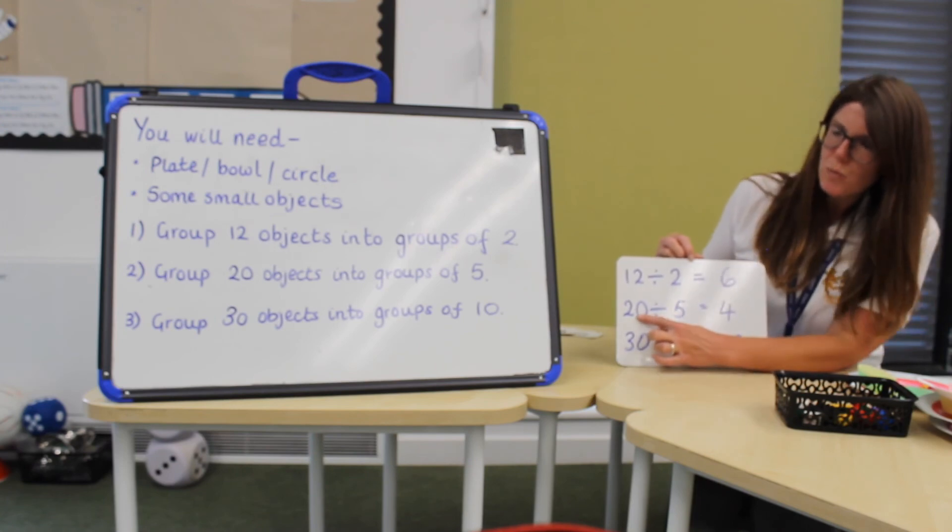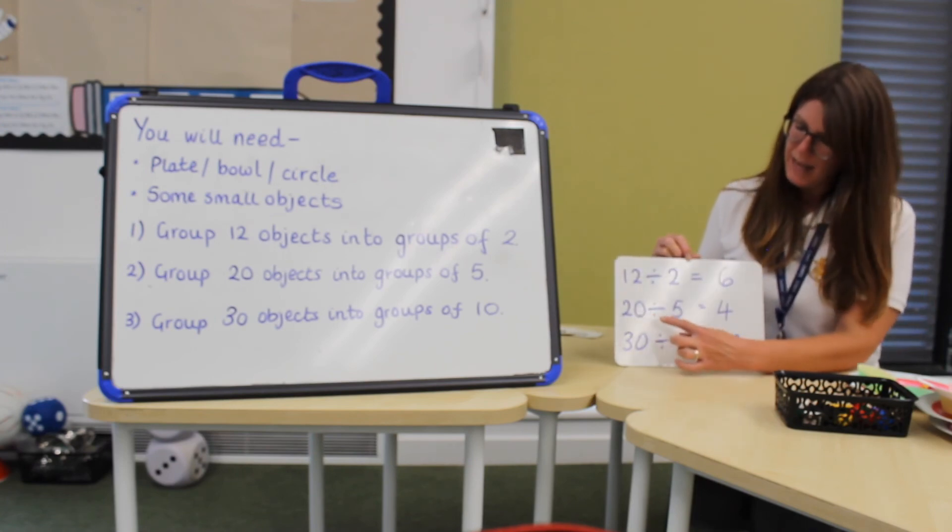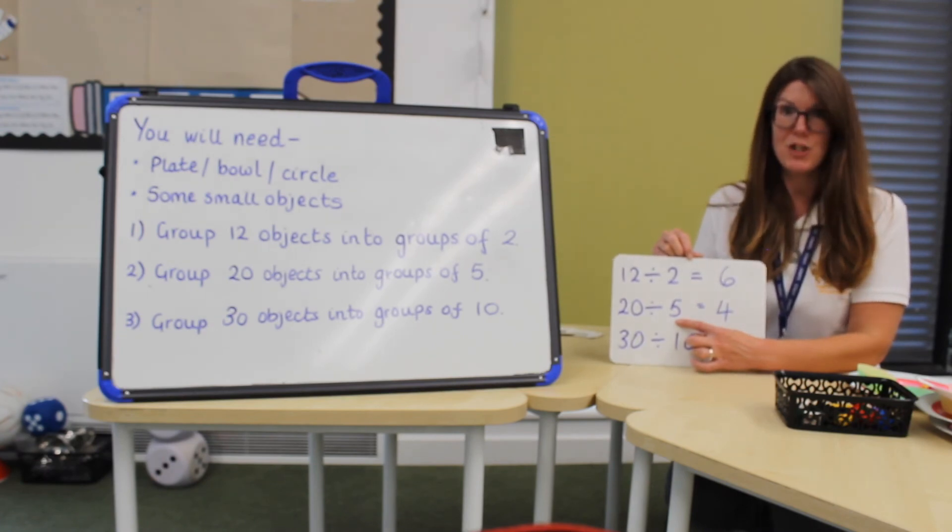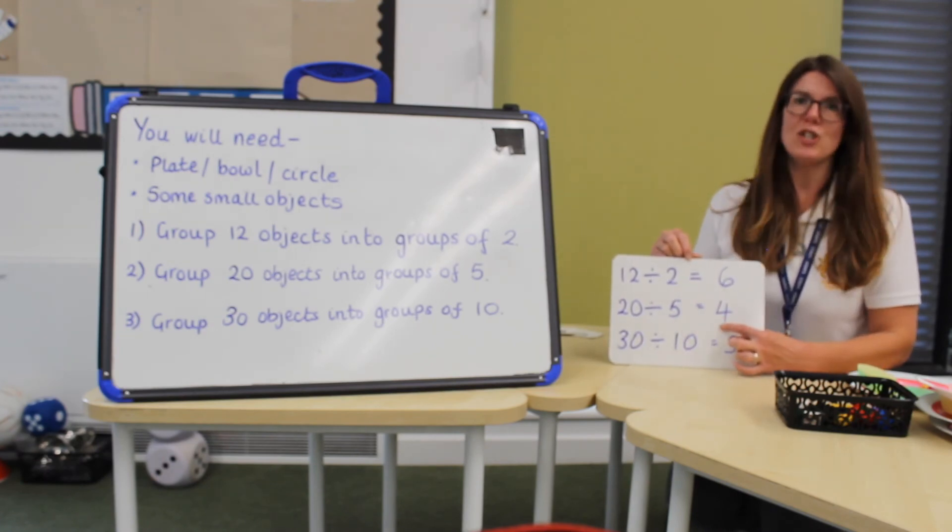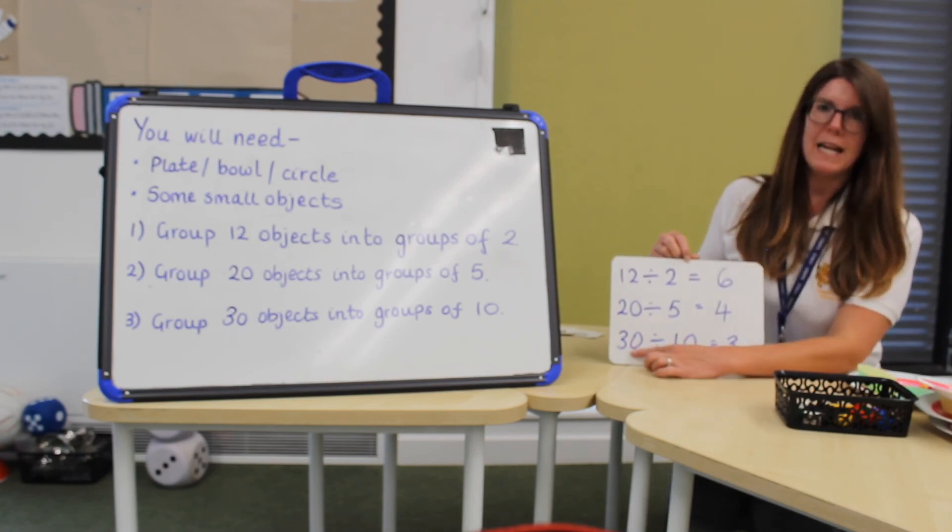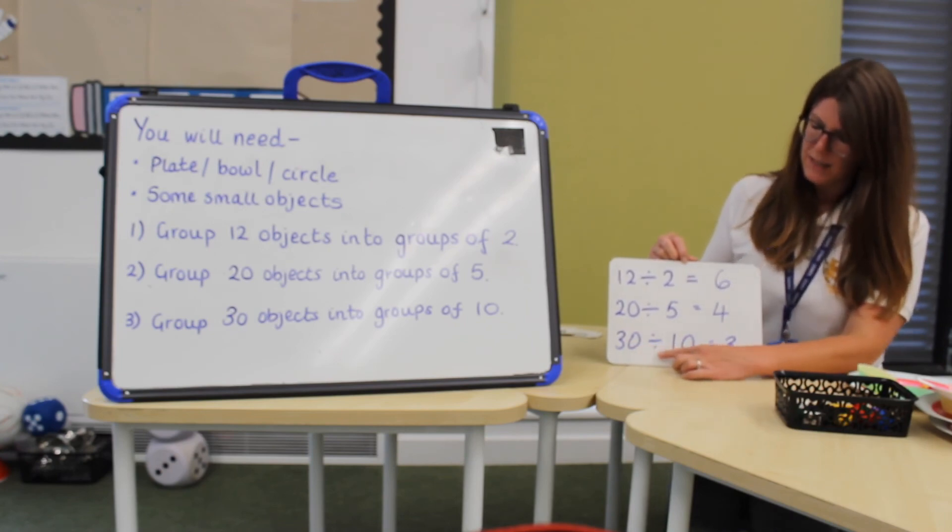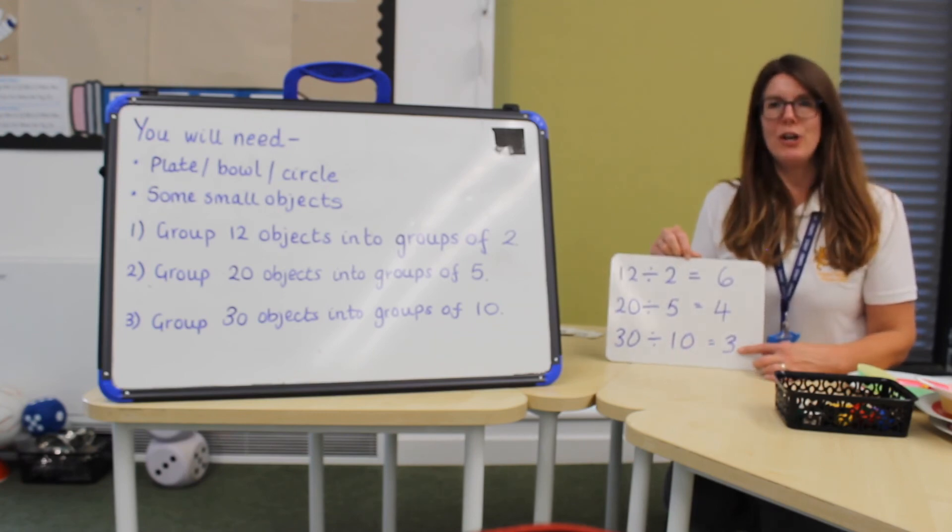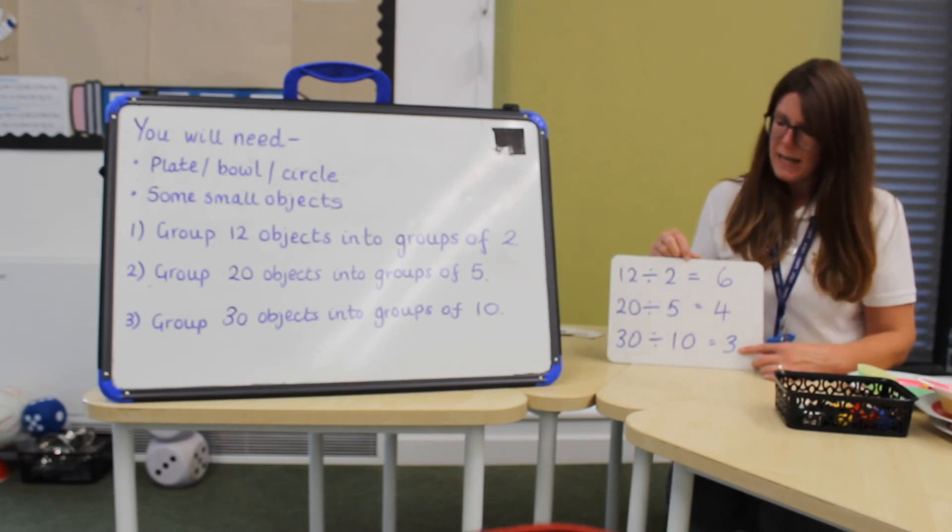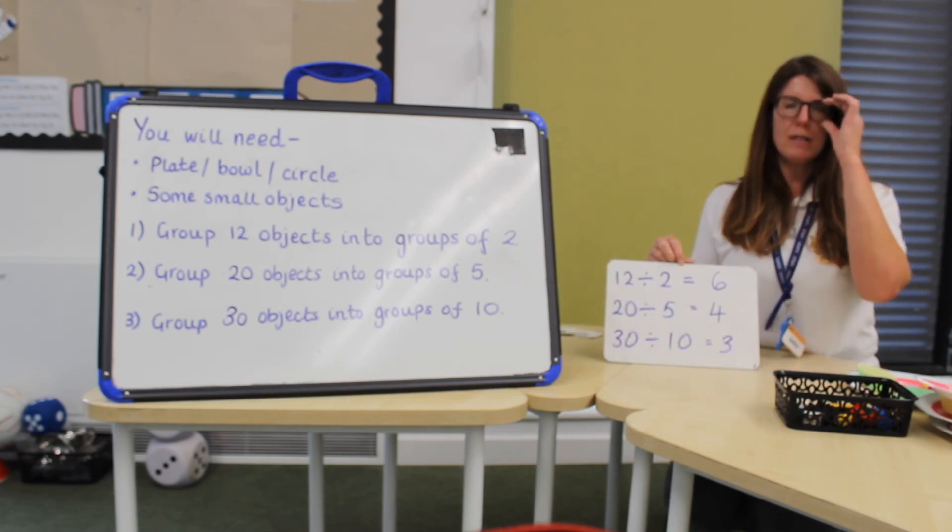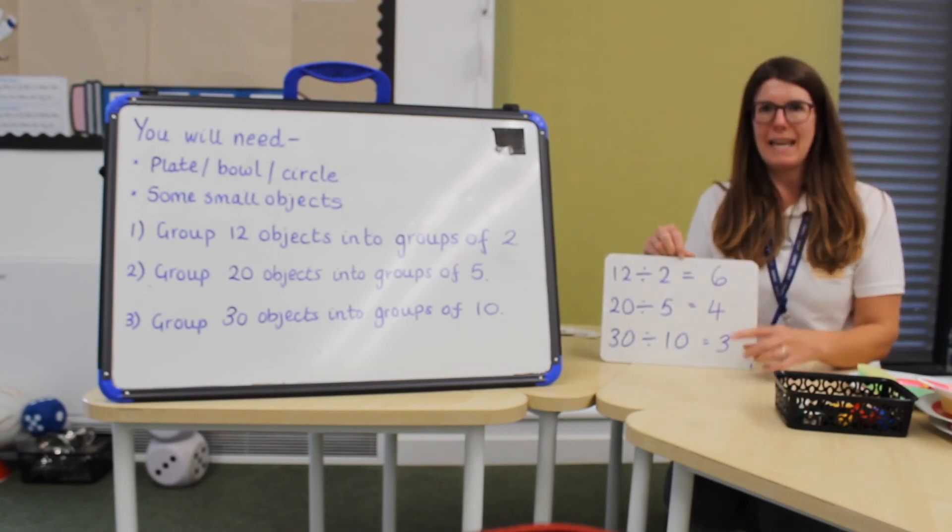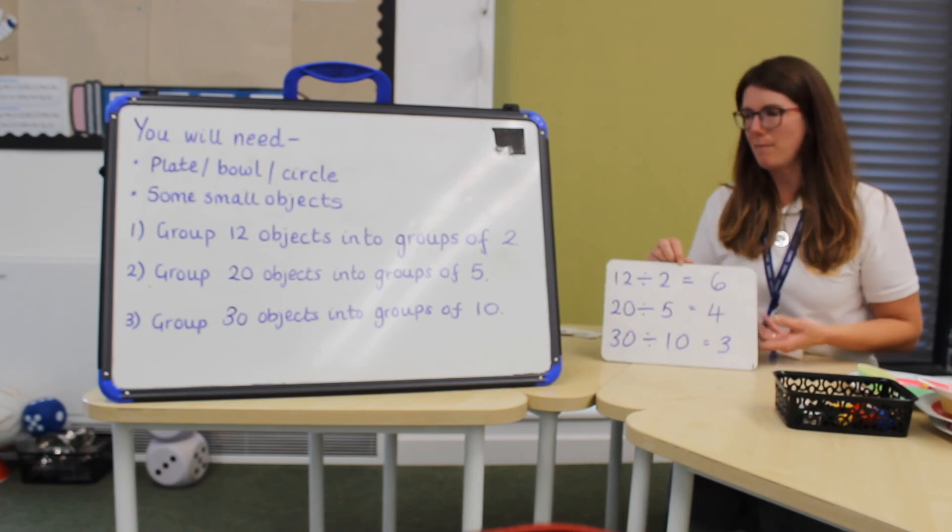The next question was to use twenty objects and divide them into groups of five. How many groups did you make? There should have been four. And then finally we had thirty objects to put into groups of ten. And you should have had three. Well done if you were able to divide these numbers by putting them into groups of the right number and seeing how many groups you had made.